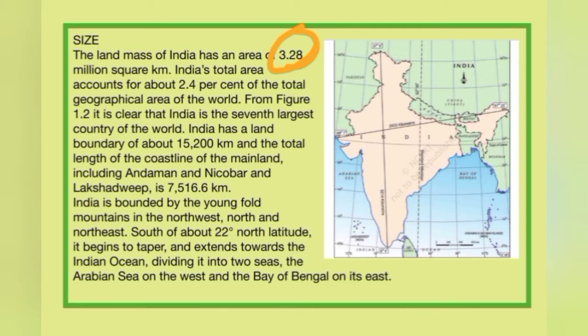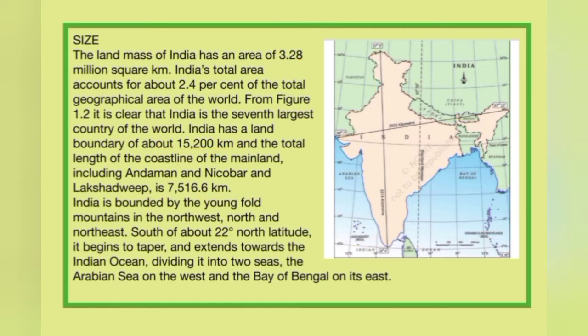India is the 7th largest country in the world — we all know this. India's land boundary, i.e., the boundary touching other land masses, is 15,200 kilometres. The total coastline, which is bordered by water bodies including the islands, is 7,516.6 kilometres. So the total land boundary is 15,200 km and the total coastline is 7,516.6 km.